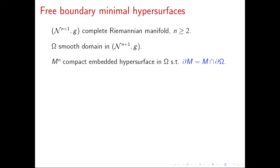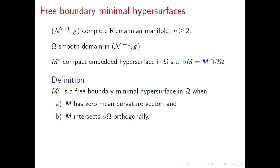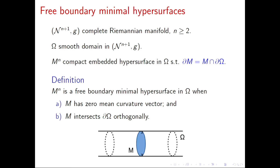Given such a hypersurface, I will say that it is a free boundary minimal hypersurface when it has zero mean curvature vector and when it is meeting the boundary orthogonally, as you see in this picture. The orthogonality condition is a very nice geometric condition that can be imposed on the boundary of a minimal surface.